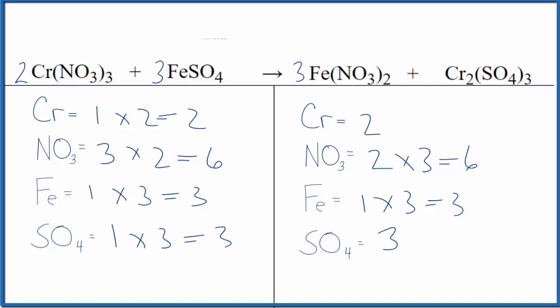If you wanted to write the states, they would look like this. Except for chromium three sulfate here, that is insoluble. And what that means is that when you have this double displacement reaction, this will be your precipitate. It'll fall to the bottom of the test tube.